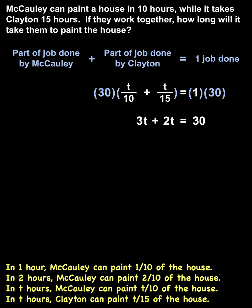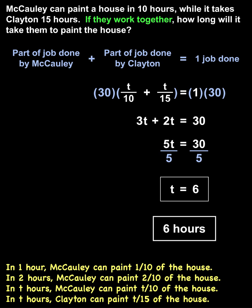So we have 3t plus 2t equals 30. Or 5t equals 30. And dividing both sides by 5, t equals 6. So if Clayton and Macaulay work together, they can paint the house in 6 hours.